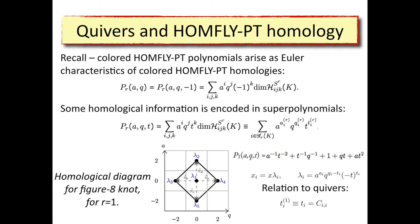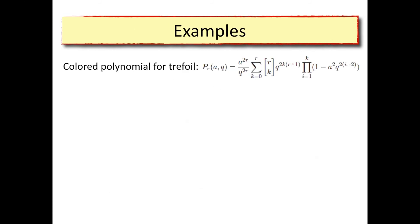The diagonal elements C_{ii} of the quiver matrix are the number of arrows from vertex i to itself — the number of loops. So this is why the number of loops encodes homological degree information. This was not built into the picture, but we just find that in the quivers the diagonal elements encode homological information.